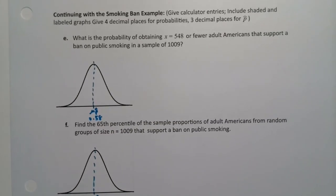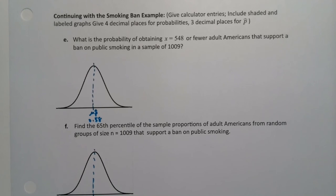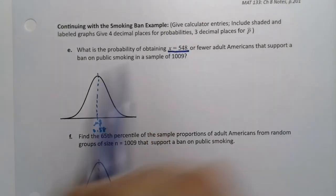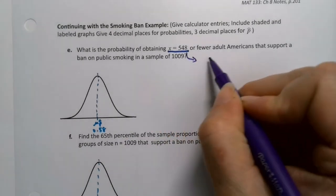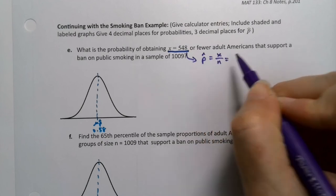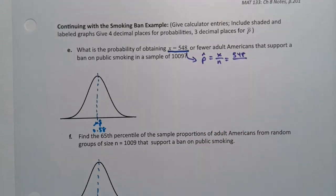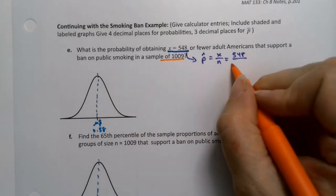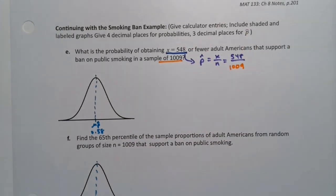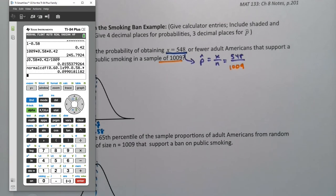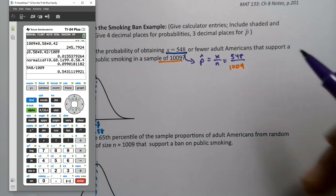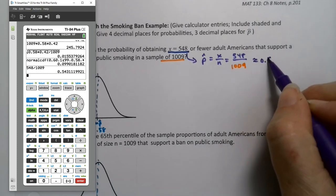Now the trick is, where is X equals 548? We don't know, because we need to figure out what this is in terms of a p-hat. So we need to find p-hat, which is X over N. That would be 548 divided by N, which was 1009. So we take 548 and we divide it by 1009, and we'll know where this is. 548 divided by 1009 tells us 54.3%, so 0.543. Of course, we're rounding a little bit, but that's okay.